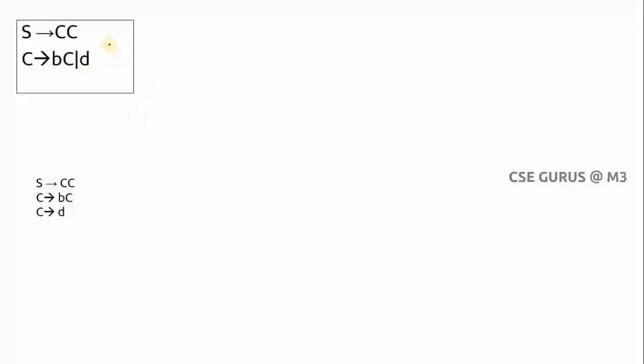I'm going directly to the procedure without definitions — refer textbooks for those. The example grammar is: S → CC, C → bC | d. The non-terminals are S and C; the terminals are b and d. The productions are numbered: 1) S → CC, 2) C → bC, 3) C → d. This is our working grammar.